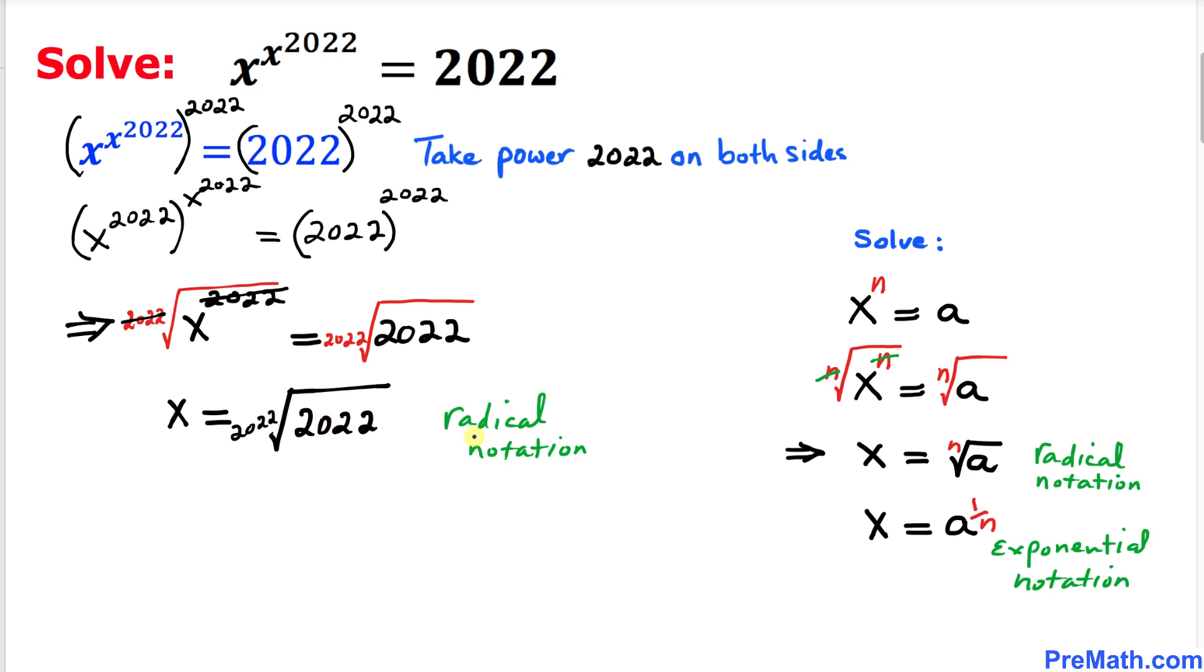Also we can write this one in terms of exponential notation as 2022 whole power 1 over 2022, and that's our solution.